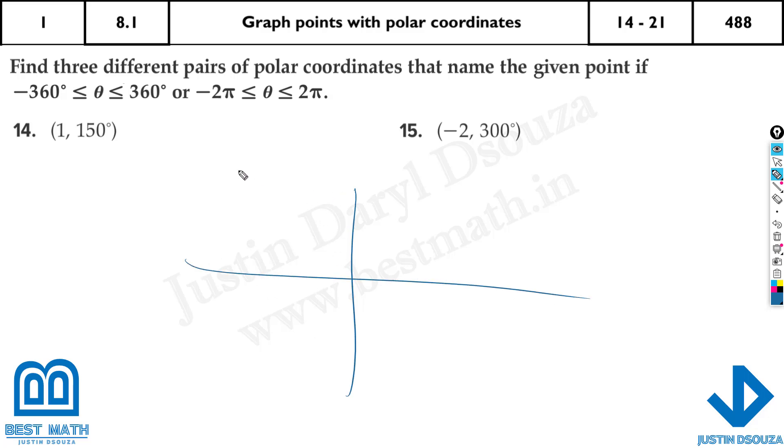Imagine this is a polar grid and see the point 1. Imagine this is the radius of 1 and 150 degrees is in between over here in the second quadrant. So one way, the easiest way is to go 1 from this side and 150 degrees.